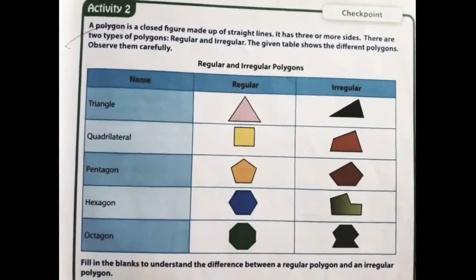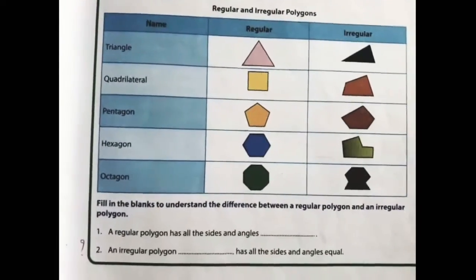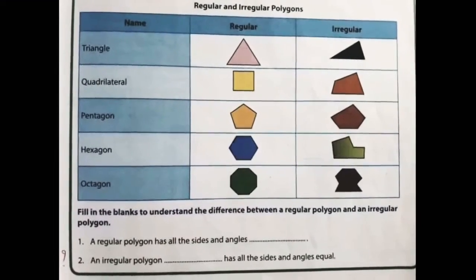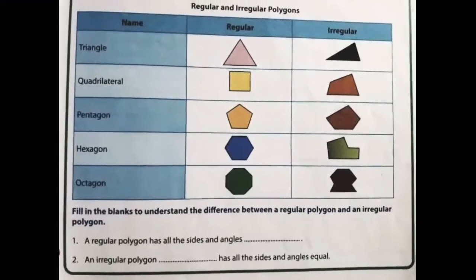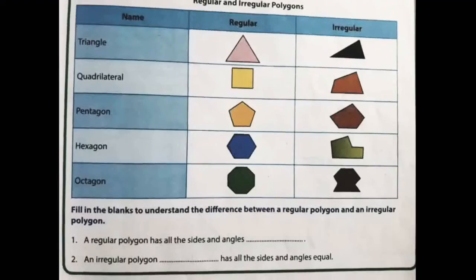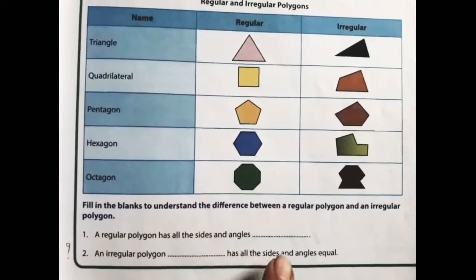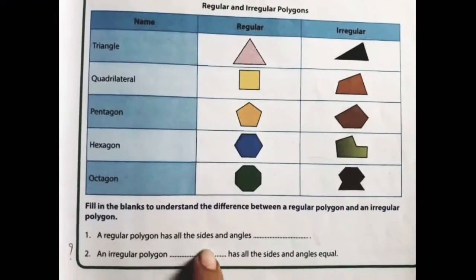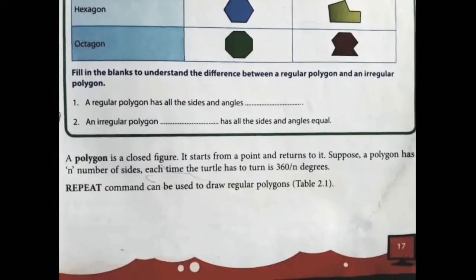Now you have to write the fill-in-the-blanks questions in your notebook. First question: a regular polygon has all sides and angles — write here 'equal'. An irregular polygon does not have all the sides and angles equal — so write 'does not' and then 'equal'.